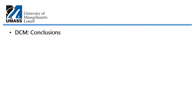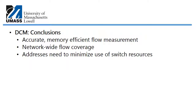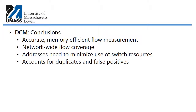I also looked at DCM — Distributed Collaborative Traffic Measurement in Software-Defined Networks. DCM has been shown to be accurate and memory-efficient for flow measurement, provides network-wide flow coverage, addresses minimizing switch resource usage, and accounts for duplicates and false positives in measurements, though network resources may still be wasted.